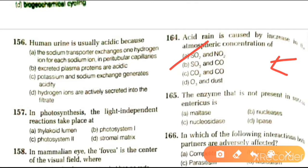Next question: the enzyme that is not present in succus entericus is maltase, nucleosidase, or lipase. Succus entericus or intestinal digestive juices contain a variety of enzymes like disaccharidases, maltase, peptidases, lipases. But nucleosidase is an enzyme found in pancreatic juice, not in succus entericus. So the answer is nucleosidase.